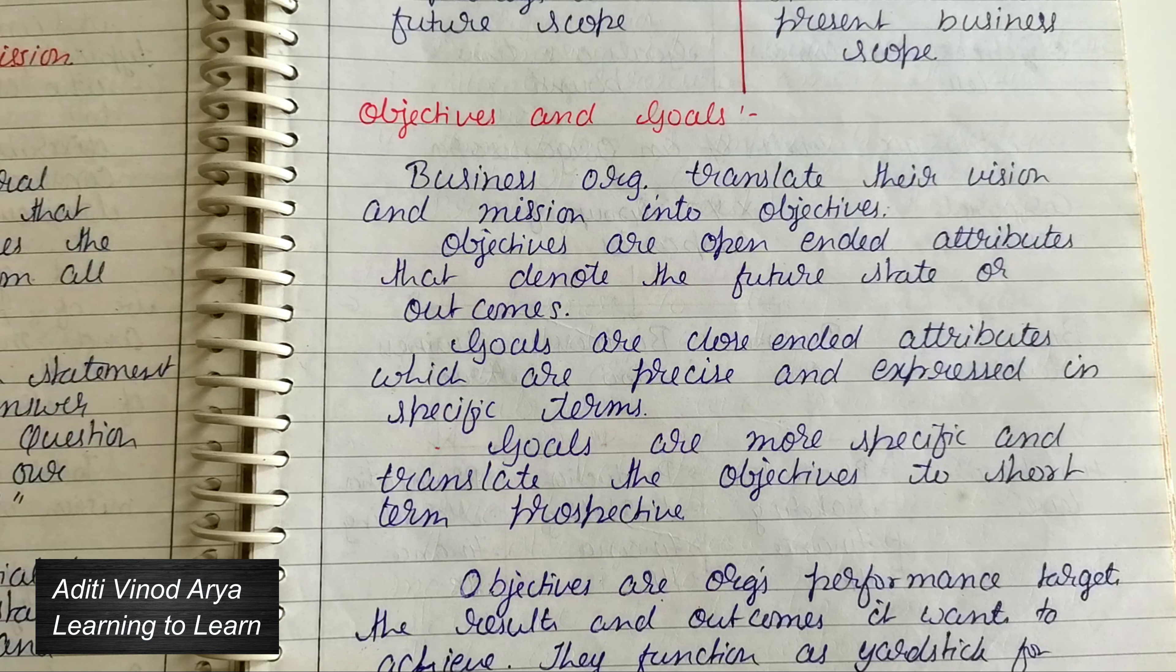Now let's quickly look at the difference between goals and objectives so we can complete today's lecture. In the next lecture we'll start with corporate strategy, business level strategy, and functional level strategy, which is a very interesting topic.